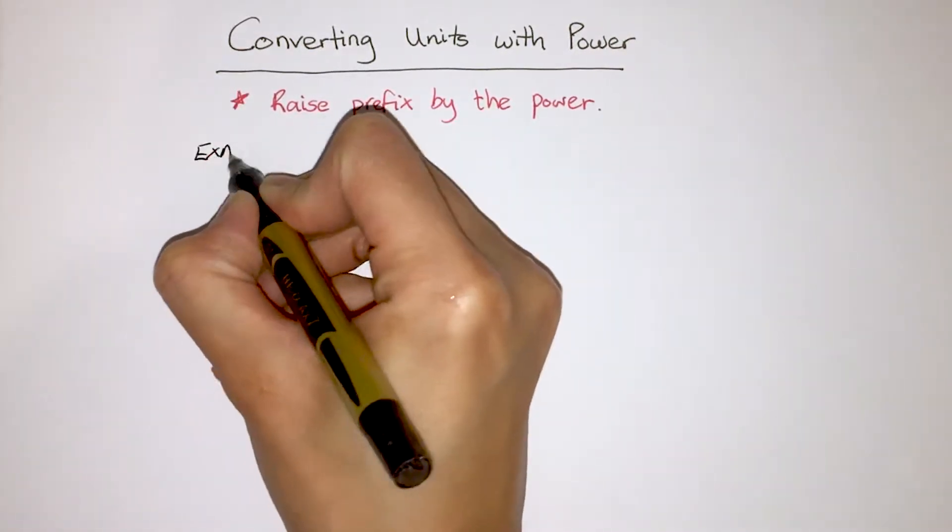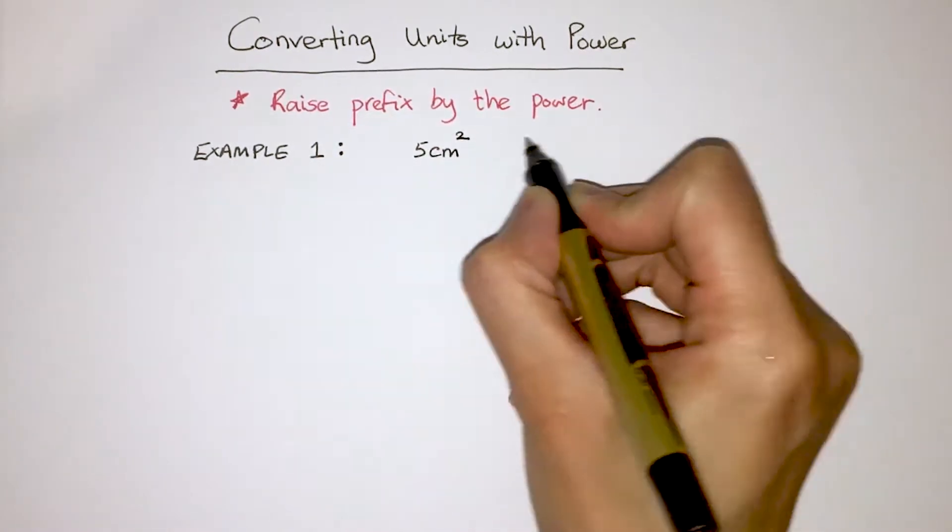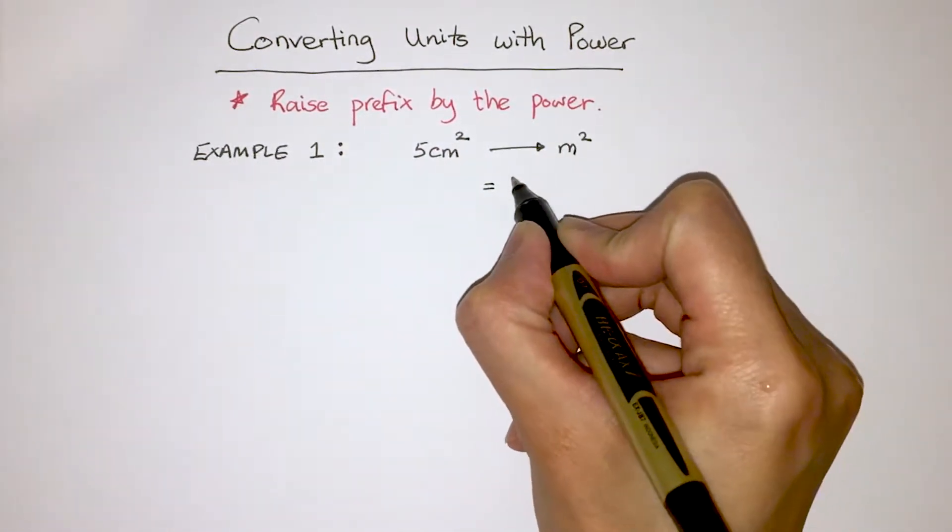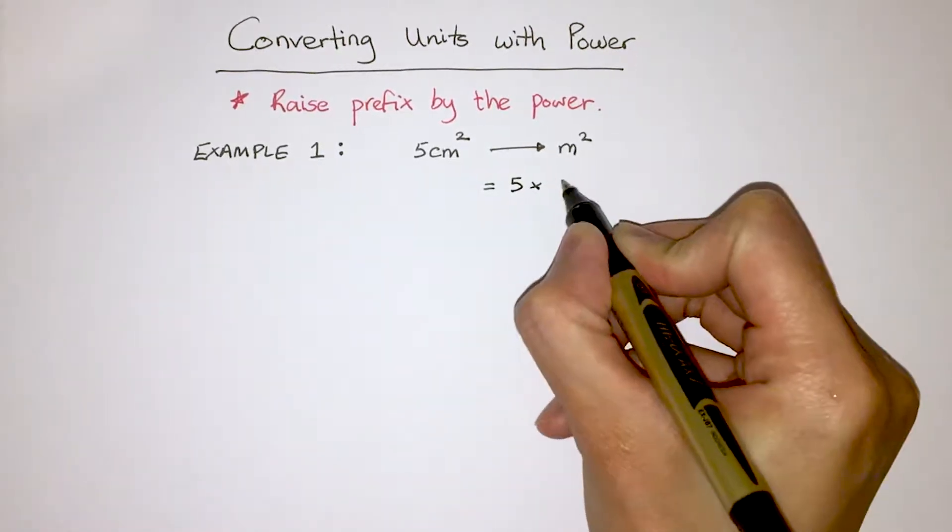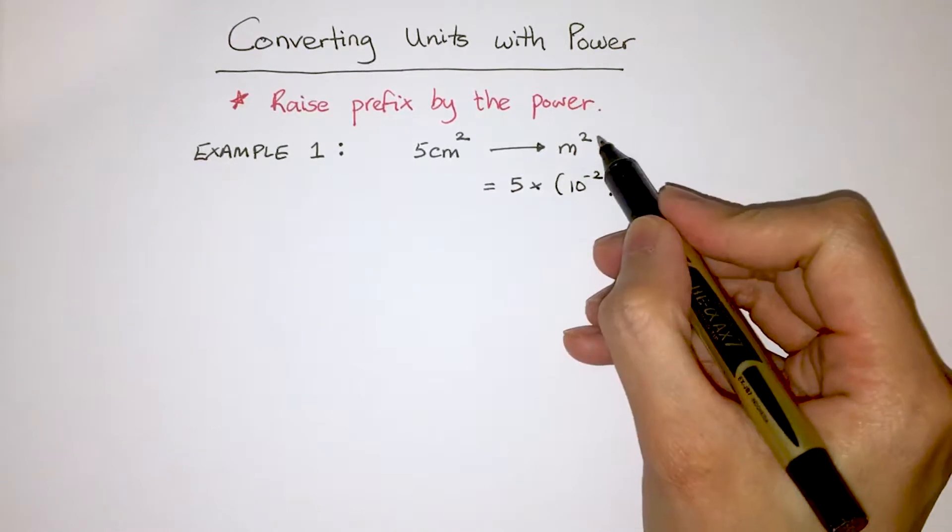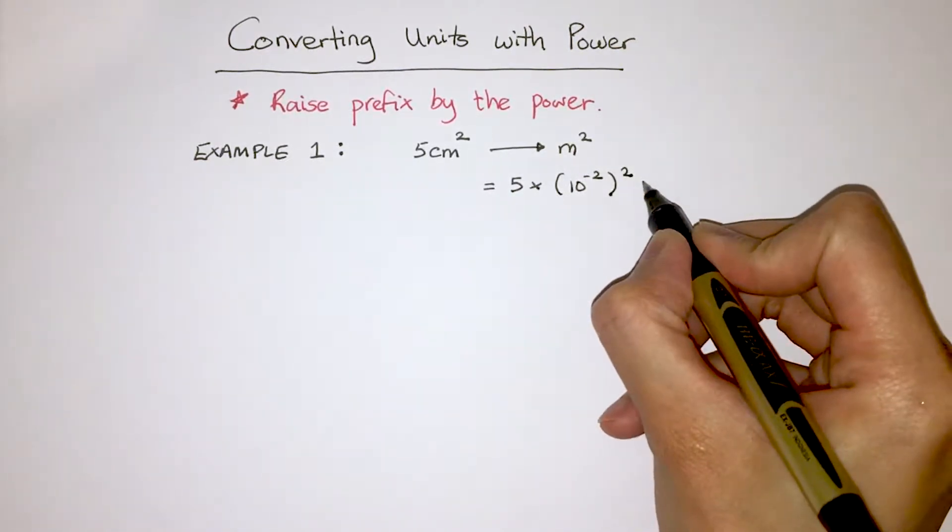Here's an example. If we want to convert 5 centimeters squared into meters squared, since centi is 10 to the minus 2, we do 5 times 10 to the minus 2, and then brackets to the power of 2 as well, because the units of length here is squared.